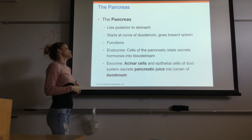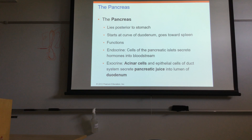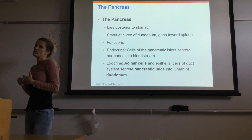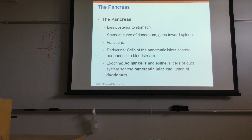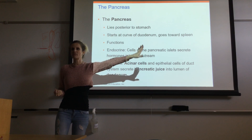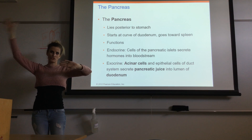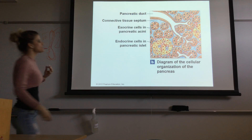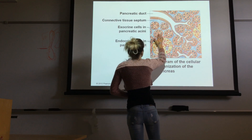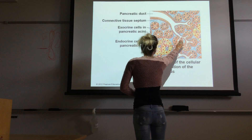Today we focus on the exocrine pancreas, which produces the digestive secretions released into the lumen of the GI tract. The exocrine pancreas contains acinar cells — small clusters — and epithelial cells lining the ducts. Exocrine secretions travel through ducts onto an epithelial surface. These pancreatic secretions, called pancreatic juice, are secreted into the duodenum when chyme arrives from the stomach.